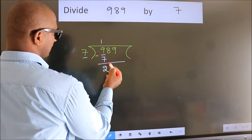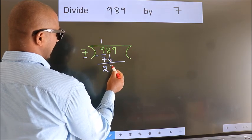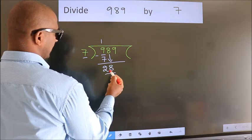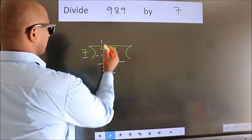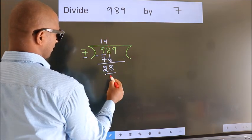After this, bring down the beside number. So, 8 down. So, 28. When do we get 28? In 7 table. 7 fourths, 28.